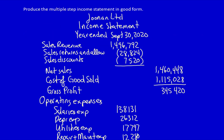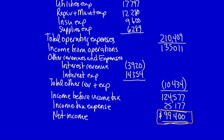The income statement indicates that the company was profitable over the last year. We can see net income was equal to $99,400. We can use that information to calculate the profit margin. Profit margin is calculated as net income divided by net sales.